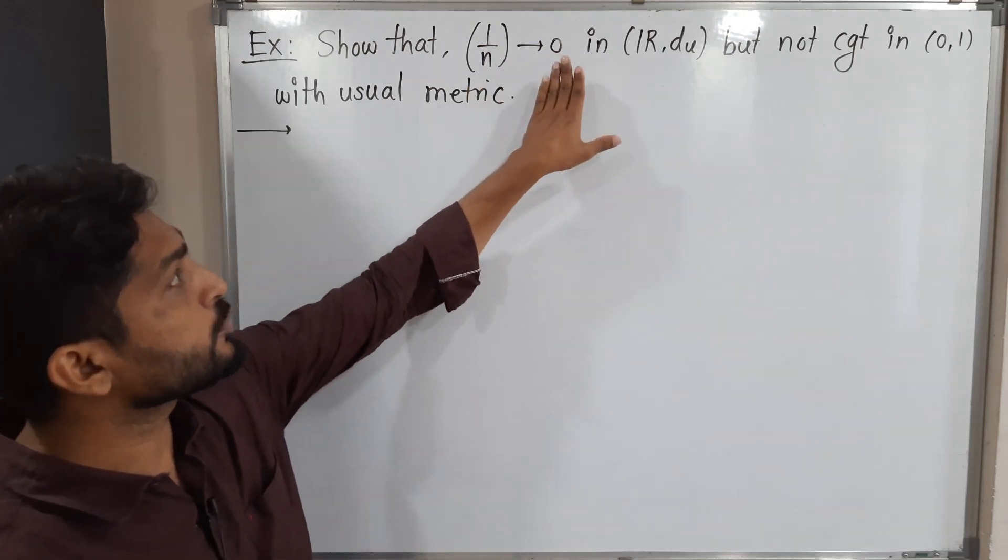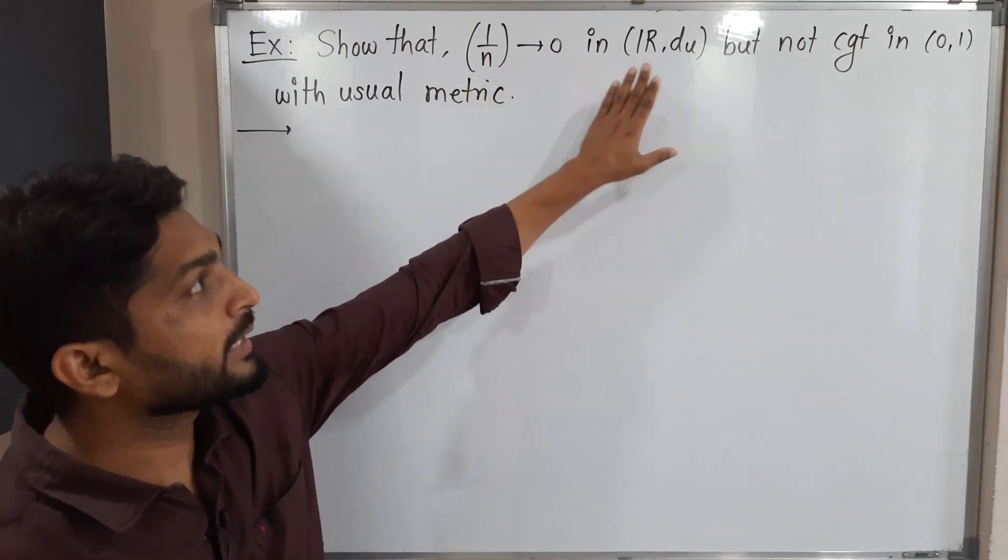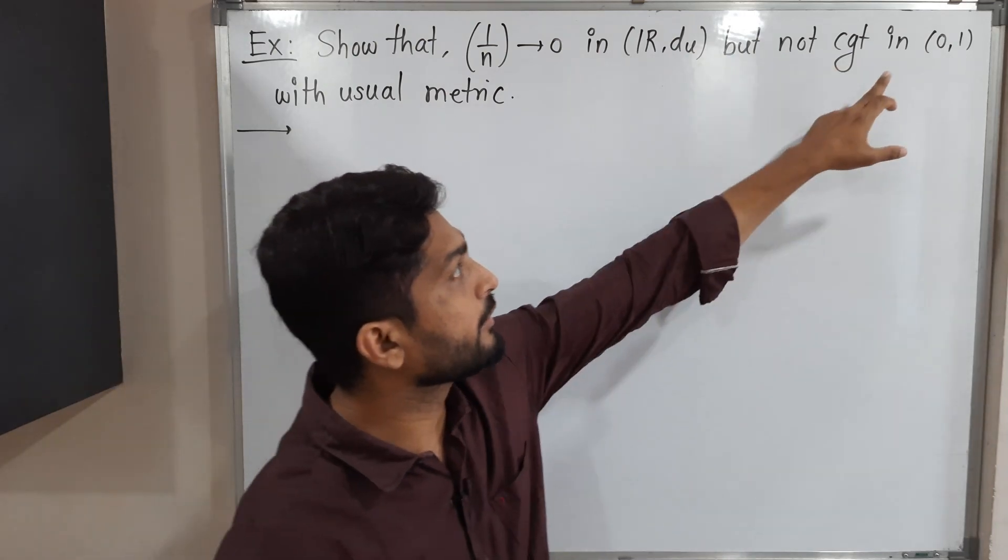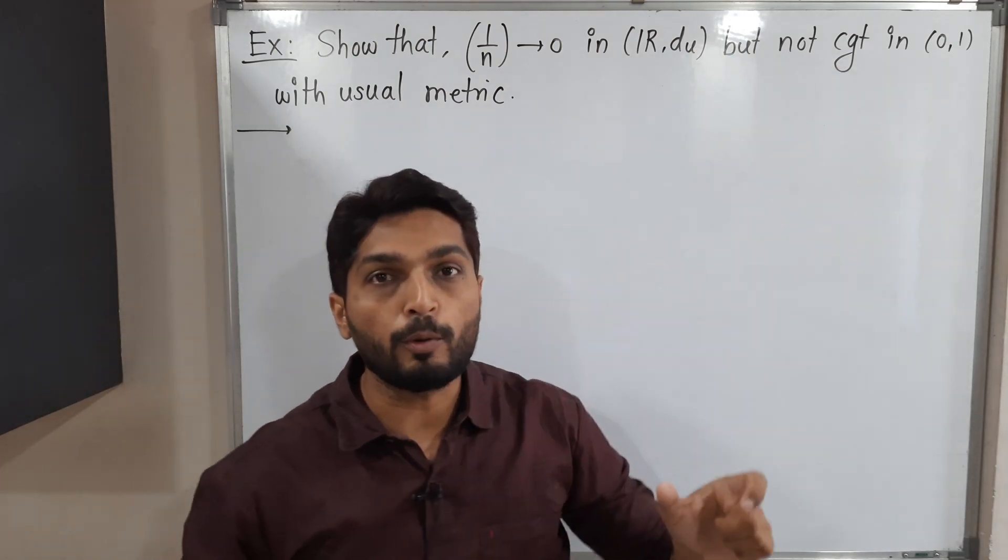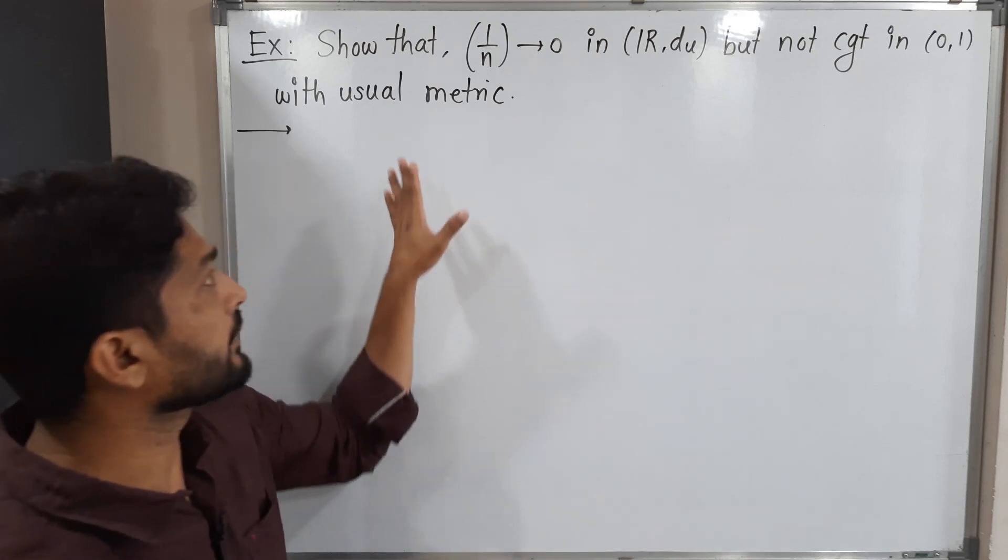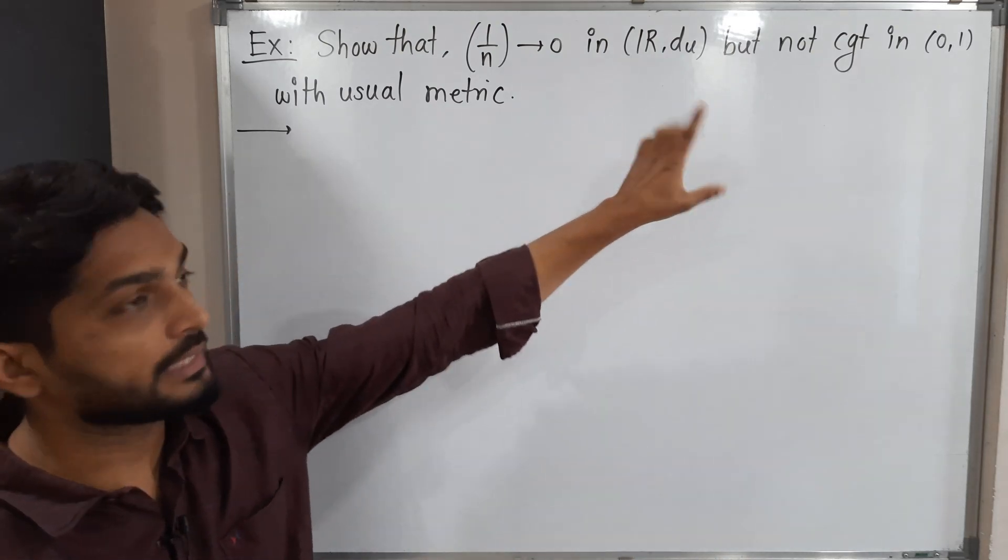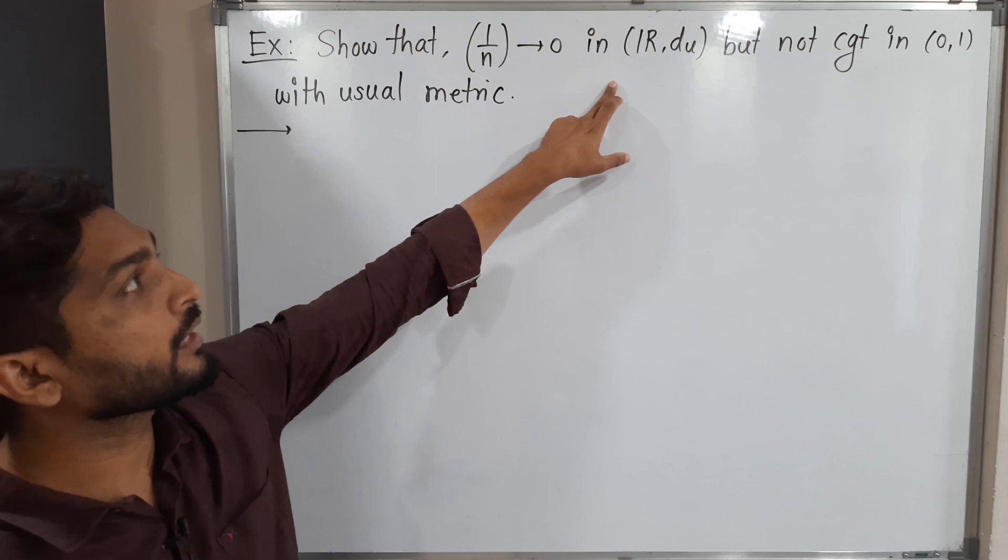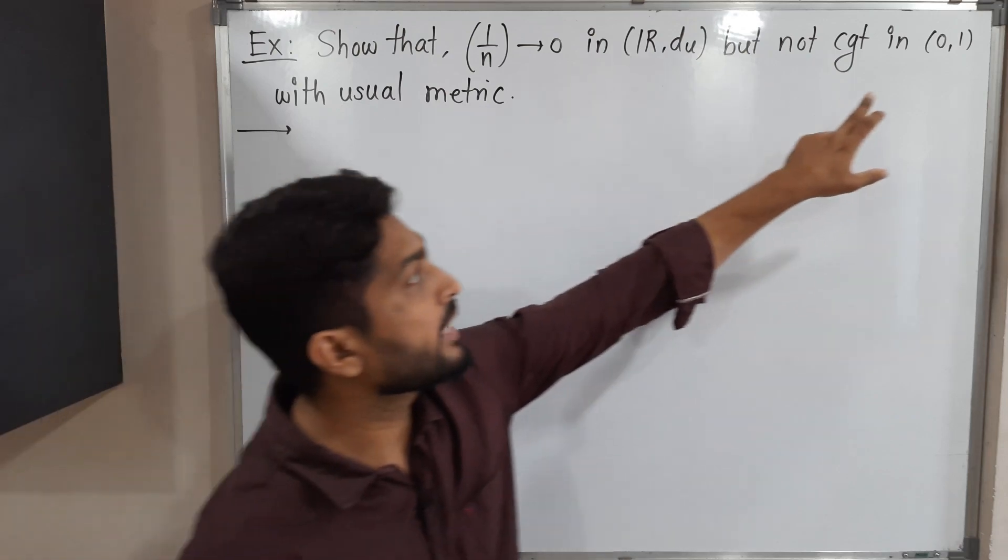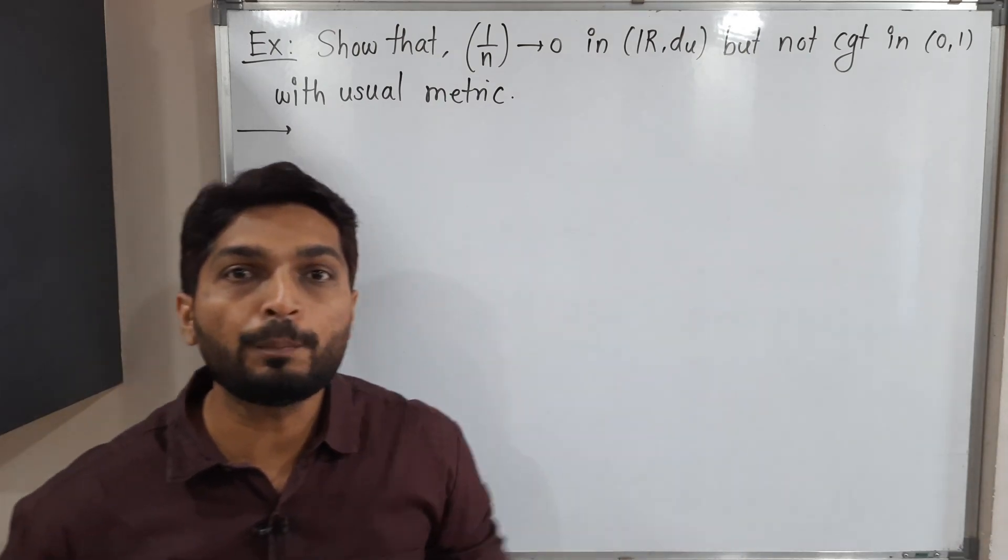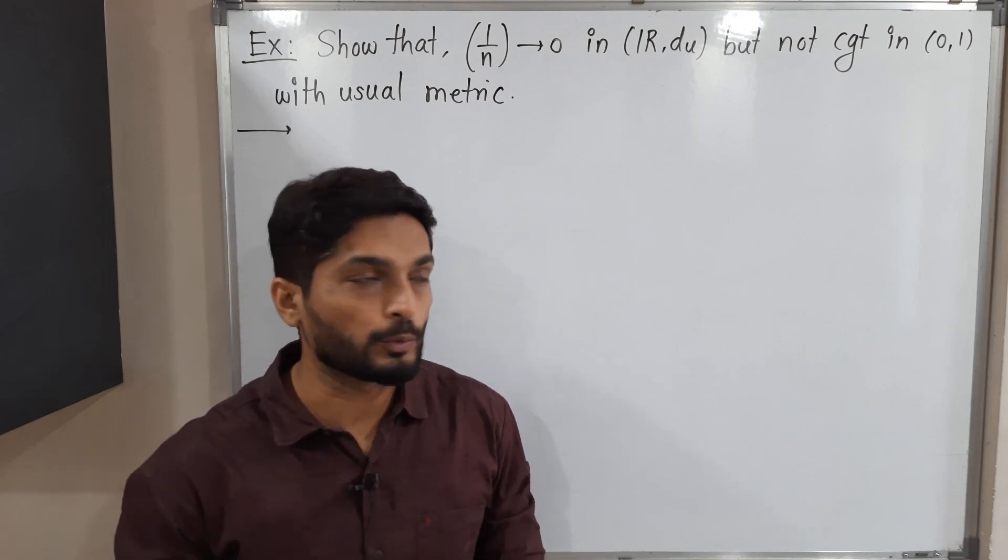So this sequence is convergent in R with usual metric D_u, but it is not convergent in a different metric space (0,1) with the same usual metric. The metric is same, just the set is different. Here we have R, the set of real numbers, and here we have simply that open interval (0,1). So let us start to prove.